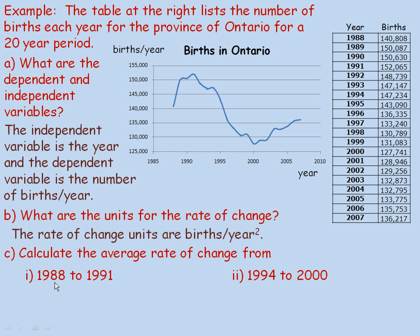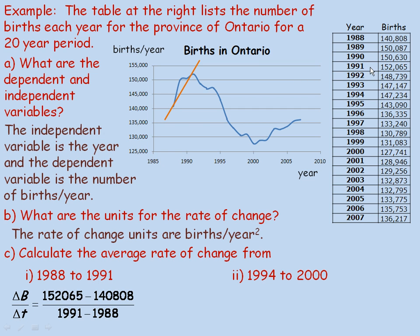In part C, we're asked to calculate the average rate of change from 1988 to 1991. I'll draw a secant from 1988 to 1991 and use the table values for accuracy. The rate of change is (152,065 − 140,808) divided by (1991 − 1988), which is divided by 3. That gives 3,752 births per year squared, meaning births per year were increasing at an average of 3,752 births per year over that period.